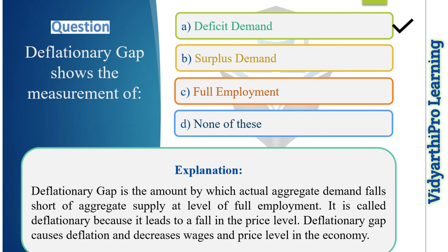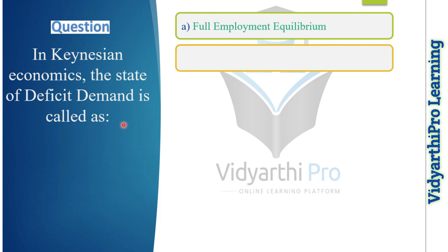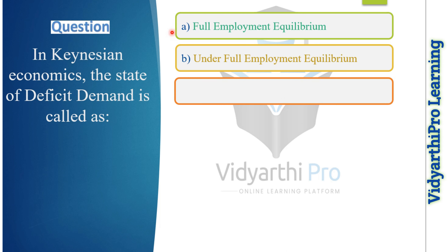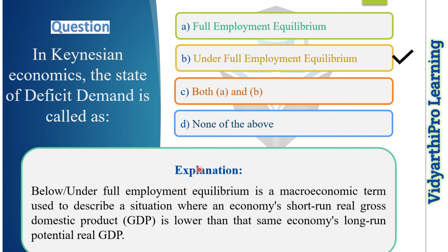Our next question: in Keynesian economics, the state of deficit demand is called what? Option one: full employment equilibrium. Option two: under full employment equilibrium. Option three: both A and B. Option four: none of the above. The correct answer is option B, under full employment equilibrium, because under full employment equilibrium is a macroeconomic term describing a situation where an economy's short-run real GDP is lower than that economy's long-run potential real GDP.